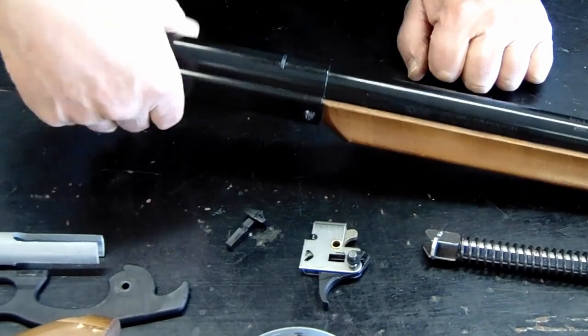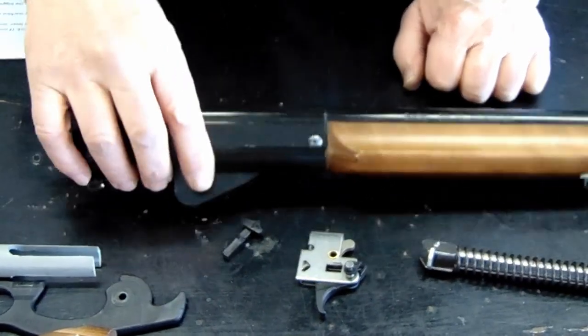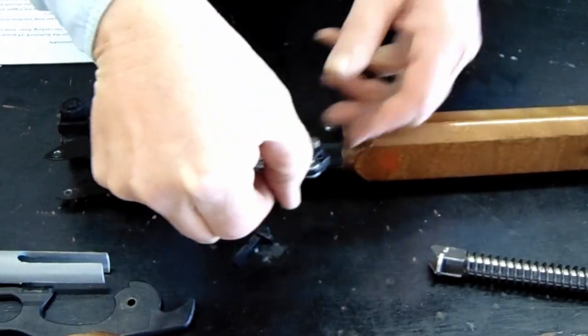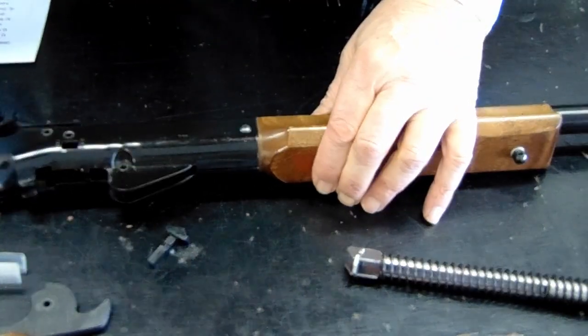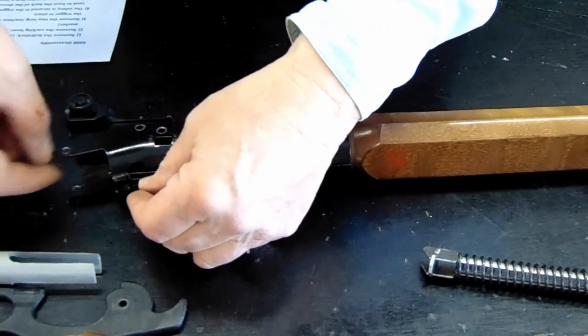The next step, once the compression plunger is in the gun, is to reinsert the trigger. Again, we keep this large flat side of the pin up, set the trigger in there, take our long machine screw.